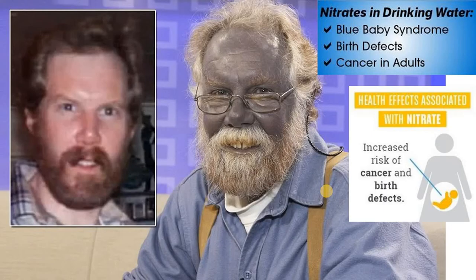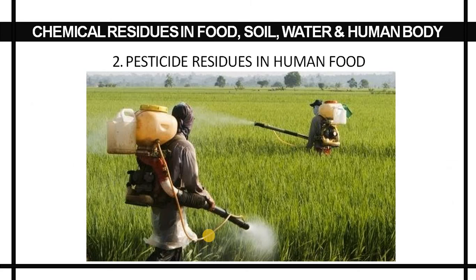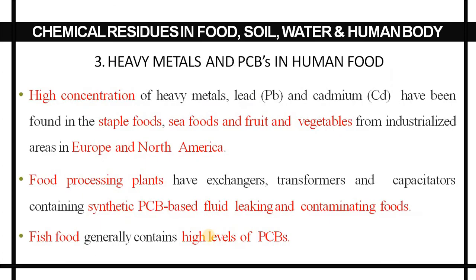Here you can see the effects of nitrates in drinking water — blue baby syndrome, birth defects, and cancer in adults. Regarding pesticide residues in human food, over 131 types of chemical pesticides are used in agriculture and horticulture, including chlorinated hydrocarbons, organophosphates, carbamates, and DDT, which is widely used in human society for non-agricultural purposes as well. Chemically grown food possesses chemical residues in raw, processed, and preserved forms.